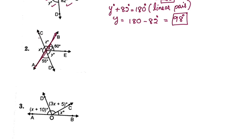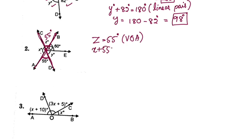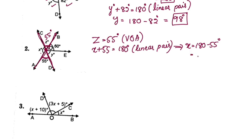This line is C, O, D. This line is O, Y, L. Z is equal to 55 degrees — vertically opposite angles are equal. This line is 55 degrees. Now X and 55 degrees form a linear pair, so X plus 55 is equal to 180 degrees. X is equal to 180 minus 55 degrees, which is equal to 125 degrees.